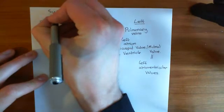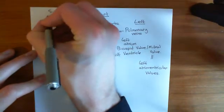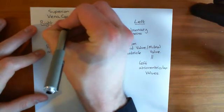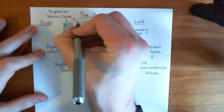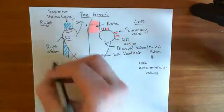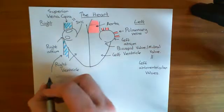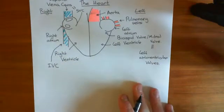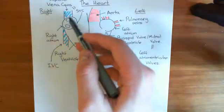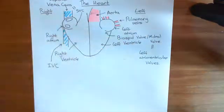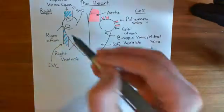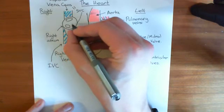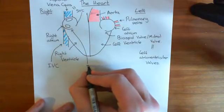The superior vena cava is often abbreviated to SVC for short. And the inferior vena cava is often referred to as the IVC — I for inferior, V for vena, C for cava. The blood from the inferior and superior vena cava comes into the right atrium, and it's then going to go into the right ventricle. The valves that close the entrance from the right atrium to the right ventricle are known as the tricuspid valve.